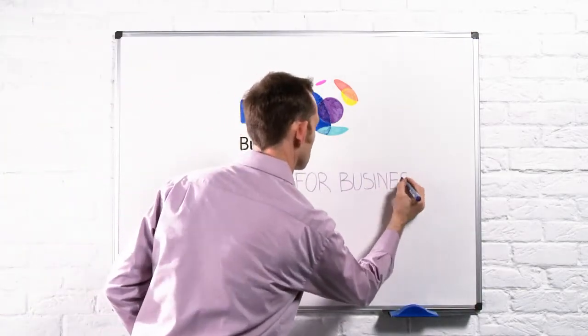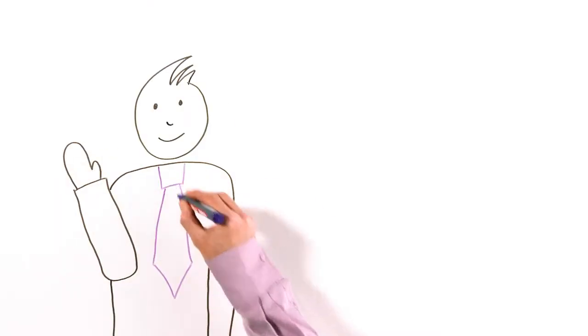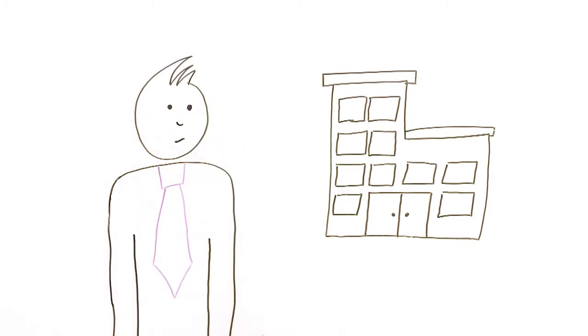The Whiteboard Sessions: Business Broadband. This is Rob. This is his office. Rob relies on his broadband to run his business and get his work done quicker.